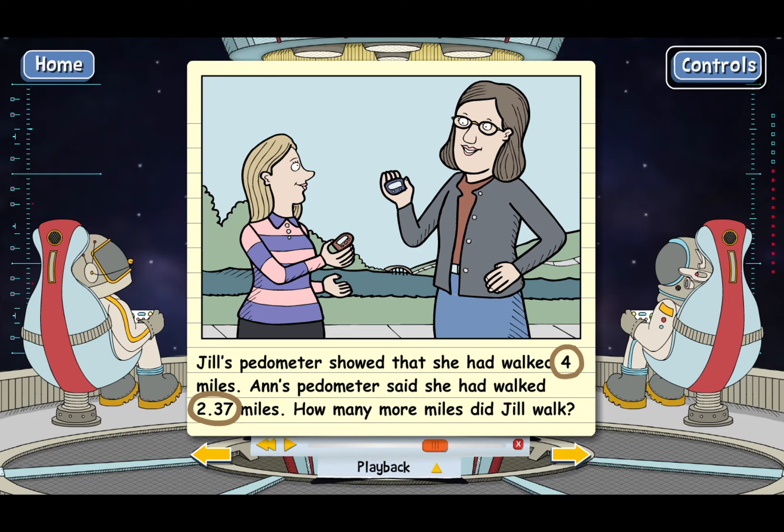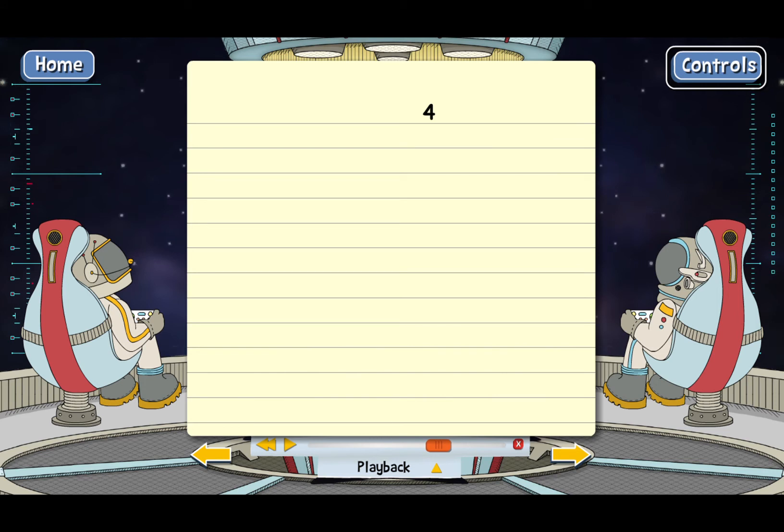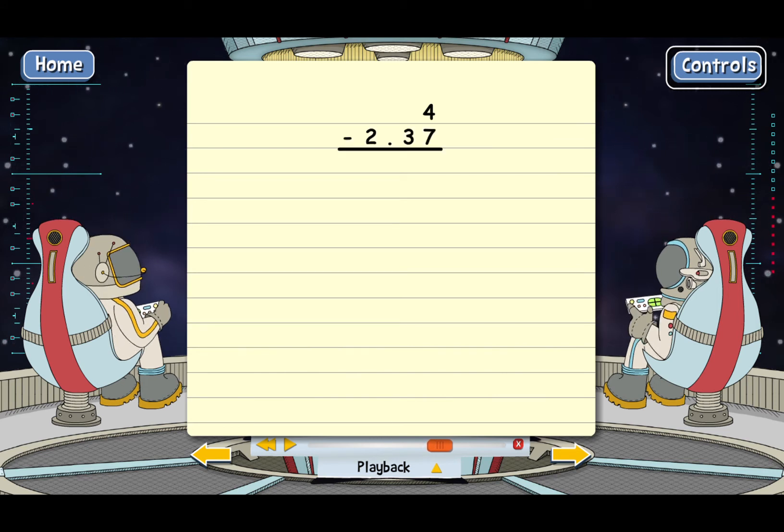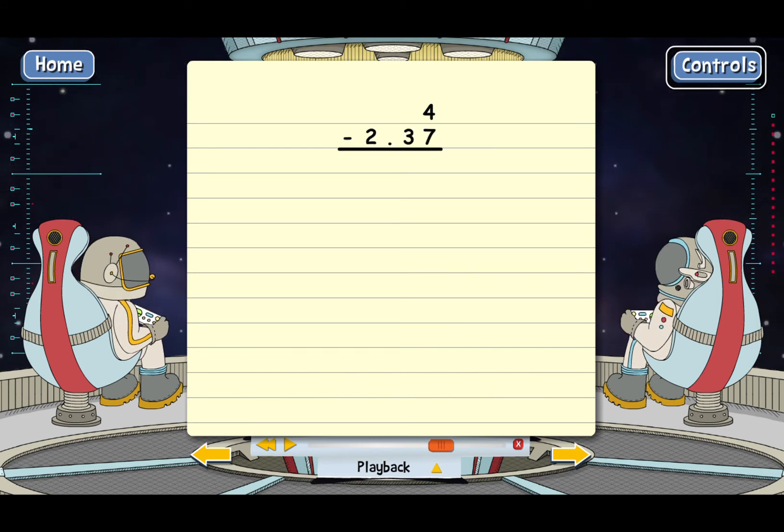The way to do it is to put 4 on top since it's bigger. And then 2.37 goes underneath. And we have the same issue that we did before. 4 is a whole number, so the decimal point isn't showing. But all we have to do is put in a decimal point to the right of the 4 and line up the decimal points in the two numbers.